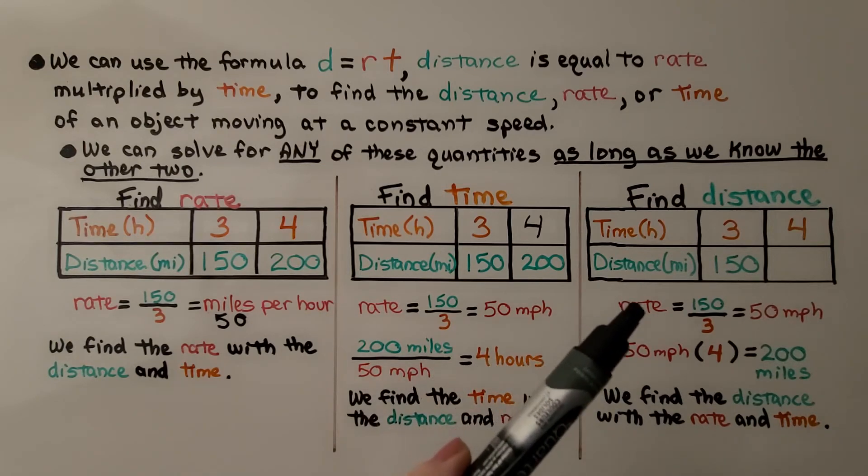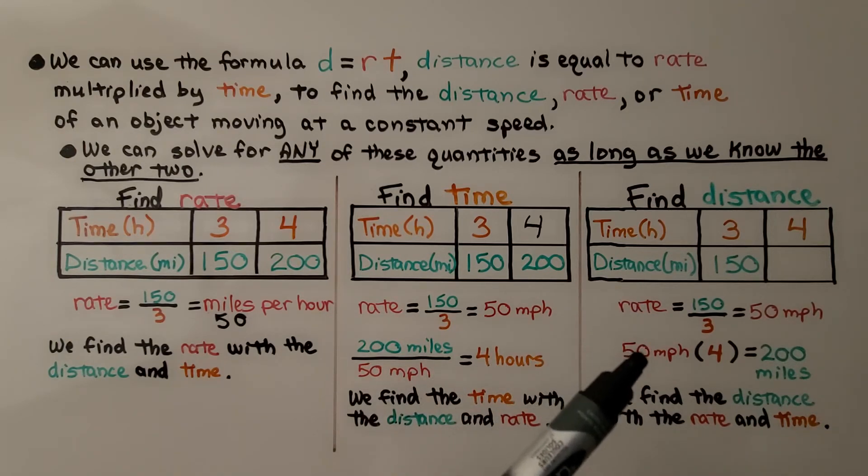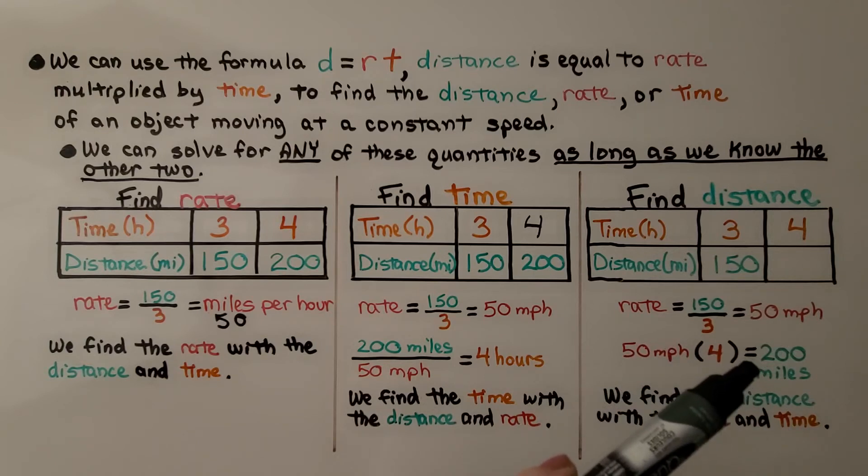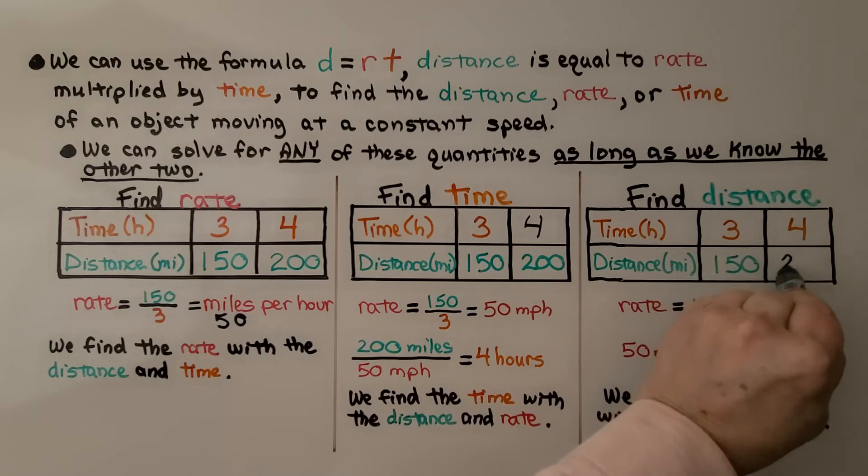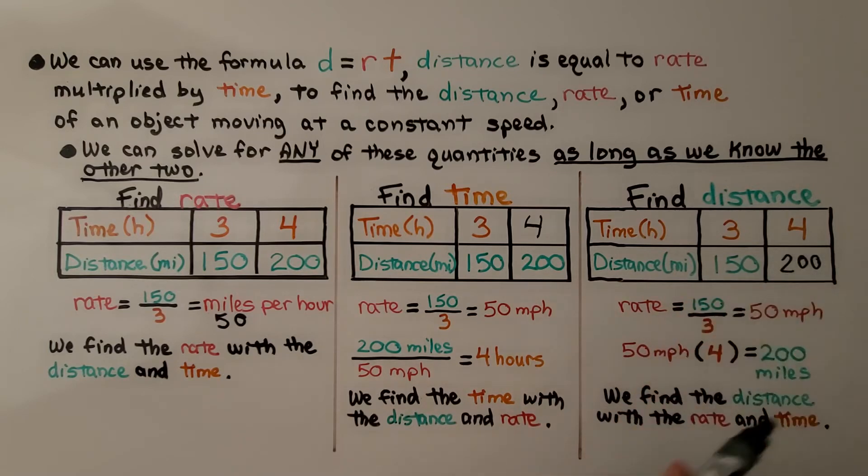If we want to find the distance, we can use the rate times the time to find the distance. So, we'll know that this is supposed to be 200. We used the rate multiplied by the time, and got the distance.